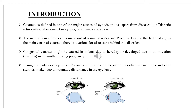Congenital cataract may be caused by hereditary factors or developed due to an infection known as rubella in the mother during pregnancy. It might slowly develop in adults and children due to exposure to radiation, drugs, or over-steroid intake. Due to traumatic disturbance in the lens, the various cataract types include nuclear, cortical, posterior capsular, congenital, secondary, traumatic, and radiation cataracts.